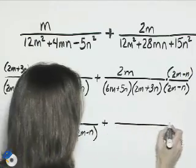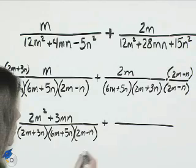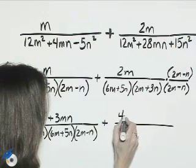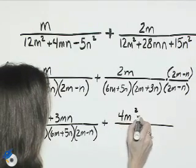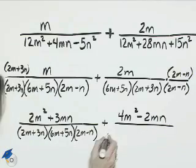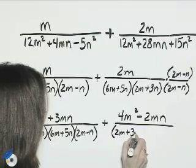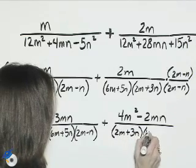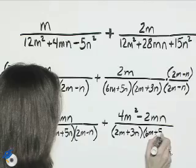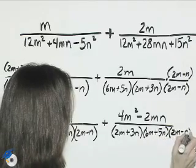The next fraction is 2m times 2m minus n for the numerator. That's 4m squared minus 2mn. The denominator, 2m plus 3n, 6m plus 5n, and 2m minus n.